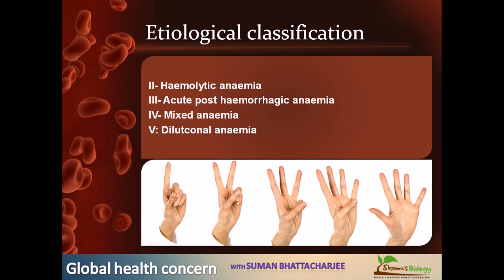That's why it's called dilutional anemia. The reasons for this can include pregnancy, volume overload, or oliguric renal failure factors.